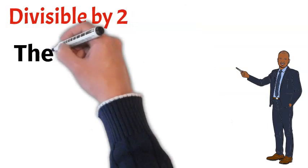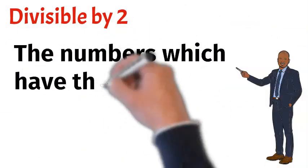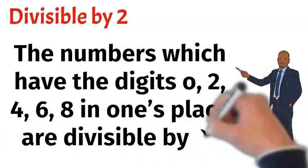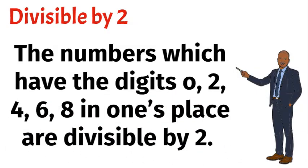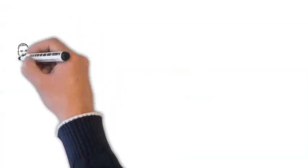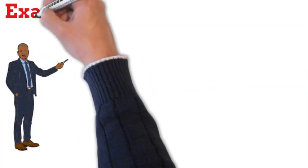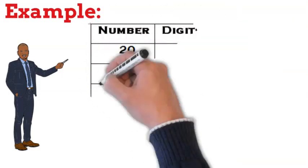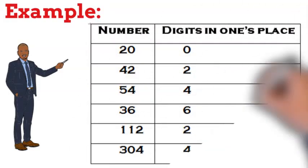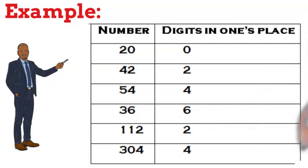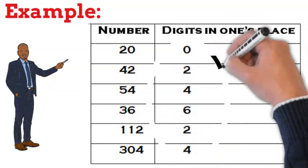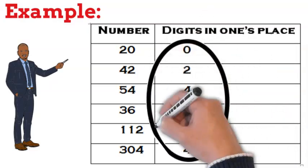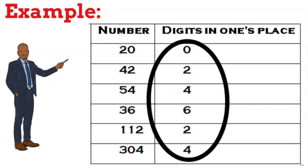Let's first discuss about divisible by 2. The numbers which have the digits 0, 2, 4, 6, 8 in the 1's place are divisible by 2. Let's understand it through some examples. The number 20 has 0 in the 1's place, so it is divisible by 2. The number 42 has 2 in the 1's place, so it is divisible by 2. Like that, the numbers 54, 36, 112, 304 are divisible by 2.